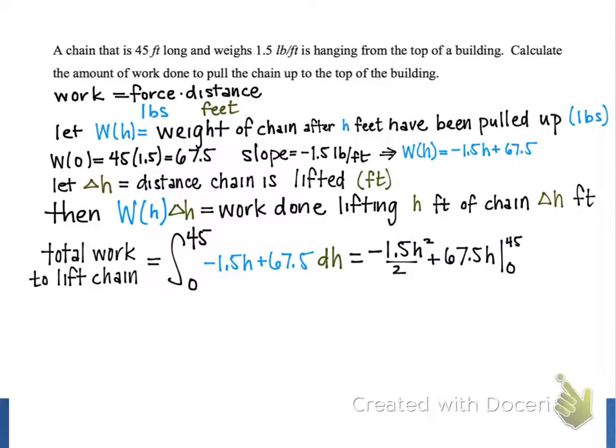So when we evaluate our antiderivative at h = 45, we get -0.75, that's our -1.5 divided by 2, and we multiply that by 45 squared. And then to that, we'll add 67.5 times 45. When we evaluate at h = 0, our result is simply 0.